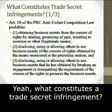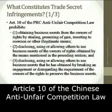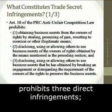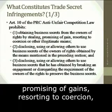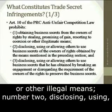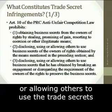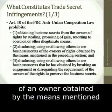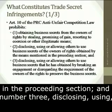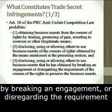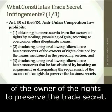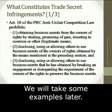What constitutes trade secret infringement? Article 10 of the Chinese Anti-Unfair Competition Law prohibits three direct infringements: first, obtaining business secrets from the owners by stealing, promising of gain, resorting to coercion or other illegal means; second, disclosing, using, or allowing others to use the trade secret obtained by the means mentioned; and third, disclosing, using, or allowing others to use the trade secret obtained in breach of an engagement or disregarding the requirement of the owners to preserve the trade secret.